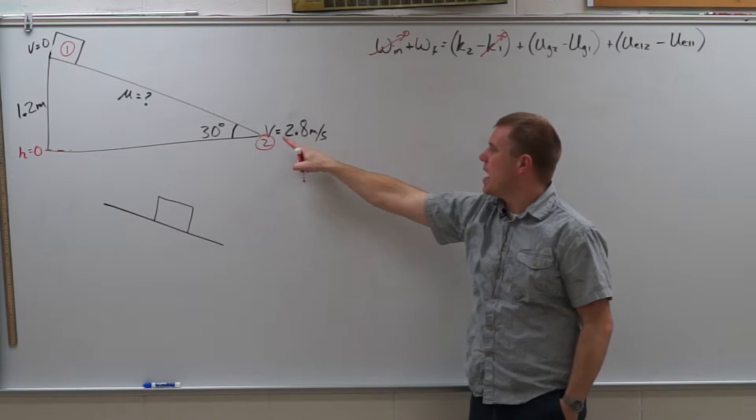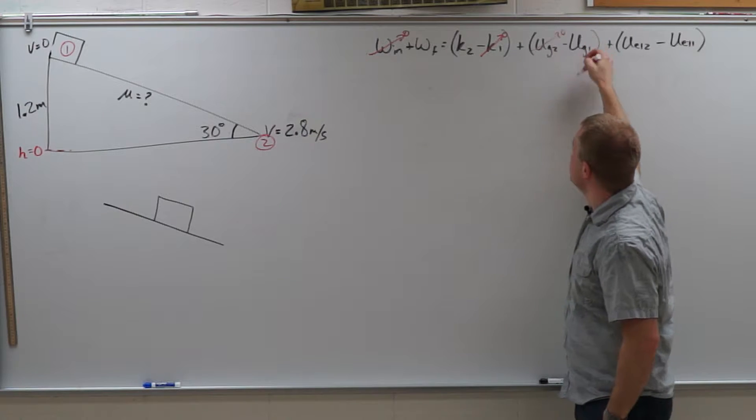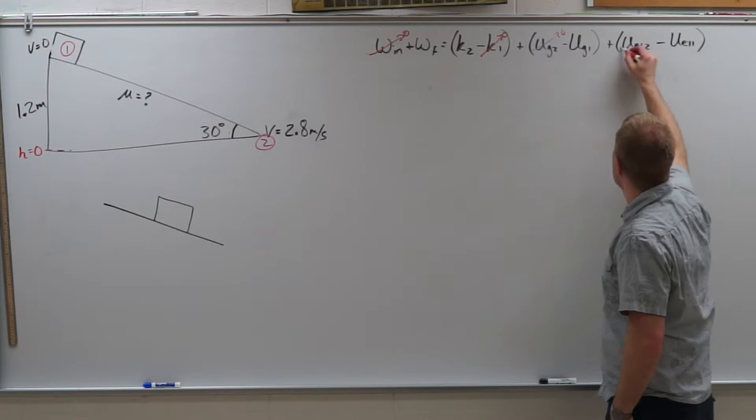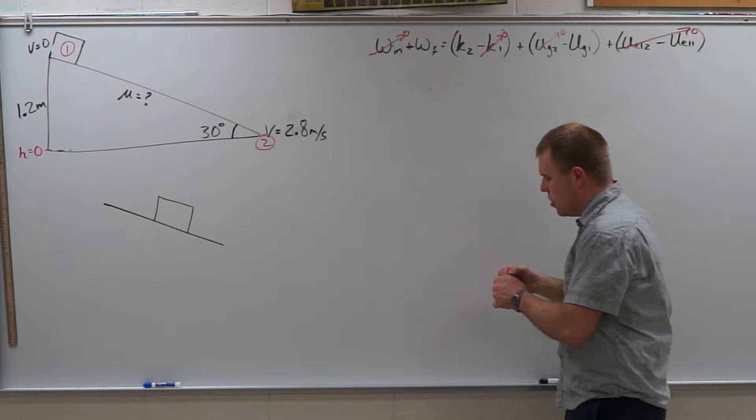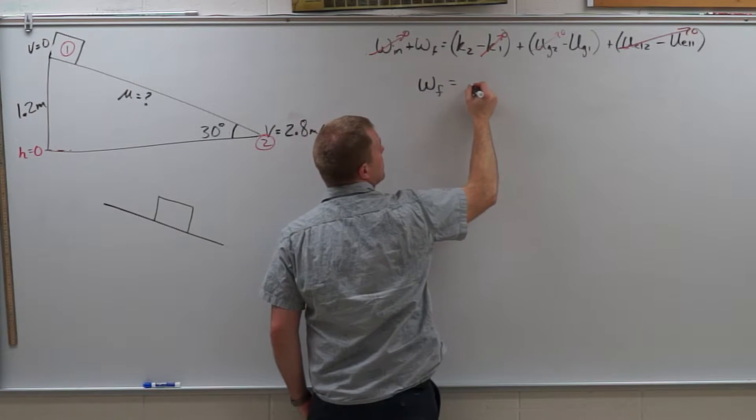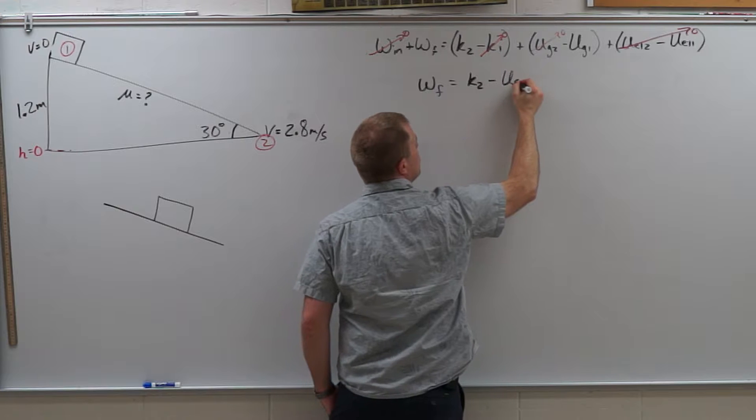UG2, the potential energy down here at the bottom is zero. We do have potential energy up at the top because it's a height of 1.2 meters and there's no springs involved. We're now going to rewrite this equation so work done by friction equals K2 minus UG1.